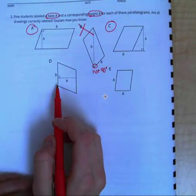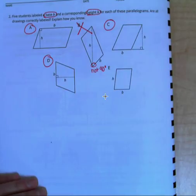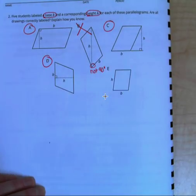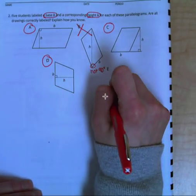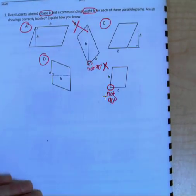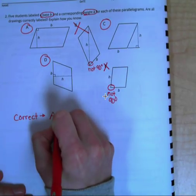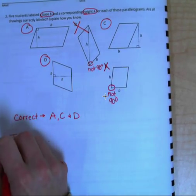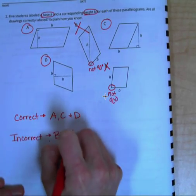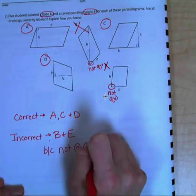For D, our base and our height meet at a 90-degree angle. They are perpendicular to each other, so D is also a good example. E, we have our base and our height. There is not a 90-degree angle symbol anywhere here. Not 90 degrees, so E is not a good example. So the letters that were correct are A, C, and D. The two that were incorrect were B and E because they were not at 90-degree angles.